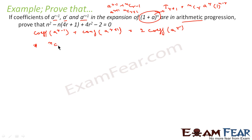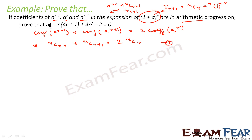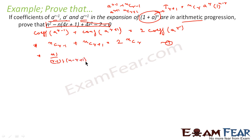So the coefficient of a to the power r minus 1 is nC(r minus 1). Let's expand: nC(r minus 1) we can write as n factorial divided by (r minus 1) factorial times (n minus r plus 1) factorial.